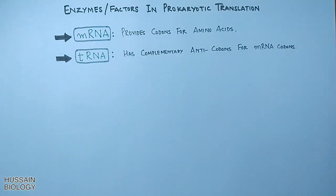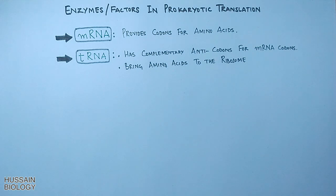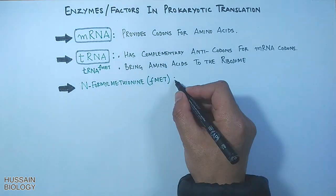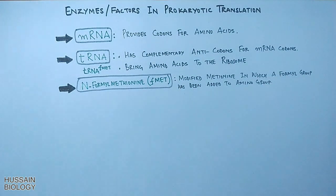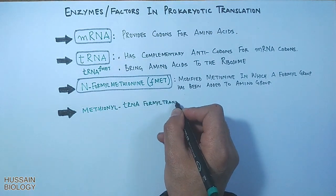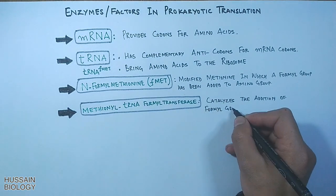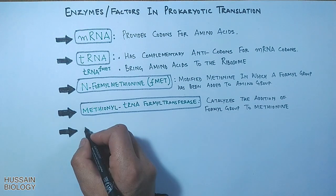The tRNA brings accurate amino acids to the growing chain in the ribosome. Another important consideration in prokaryotes is the first amino acid, which is N-formyl methionine (fMet) — a modified methionine in which a formyl group has been added. The enzyme methionyl-tRNA formyltransferase catalyzes the addition of the formyl group to methionine.